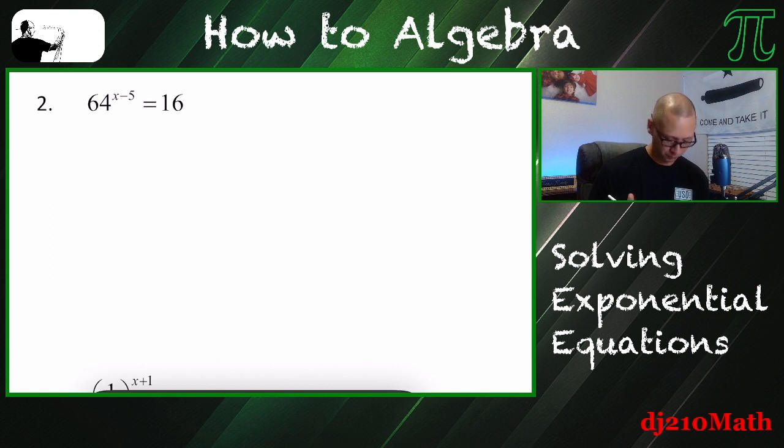Okay, number two. So 16, right off the bat, is going to be 4 squared, right? 4 times 4 is 16. So I've kind of locked myself into 4. So I want to write 64 base 4 to some exponent.